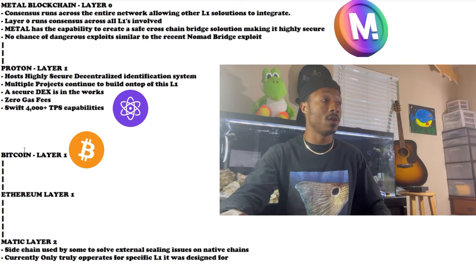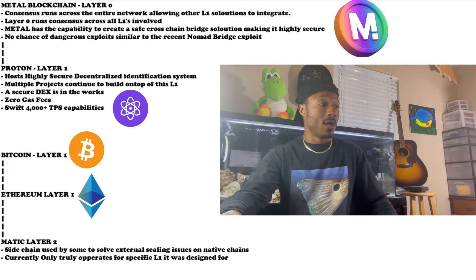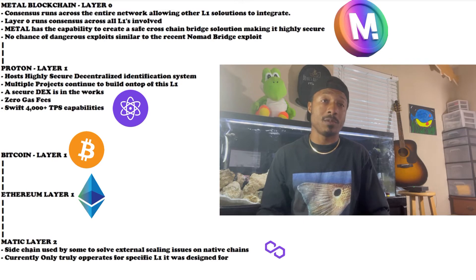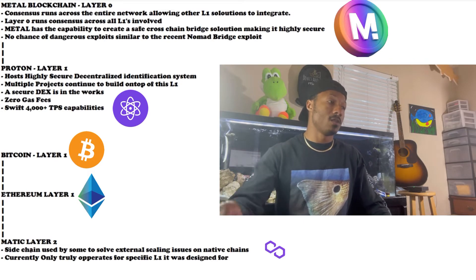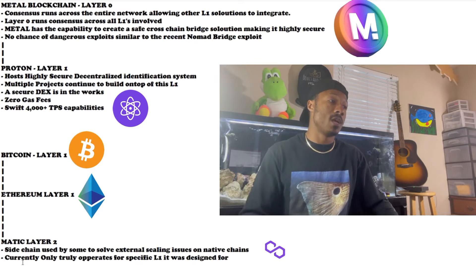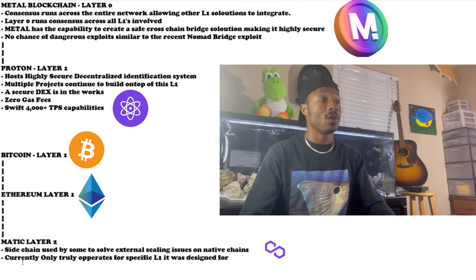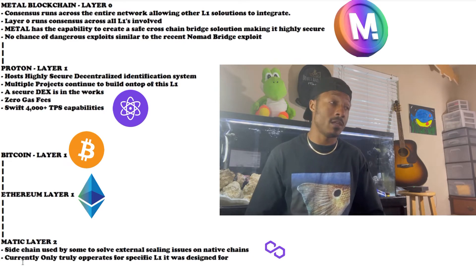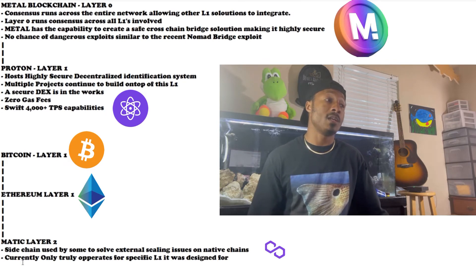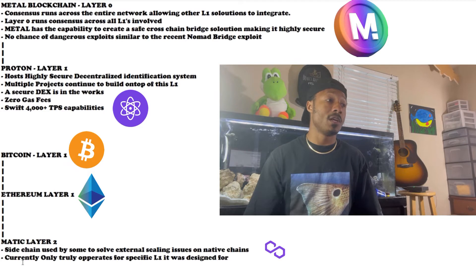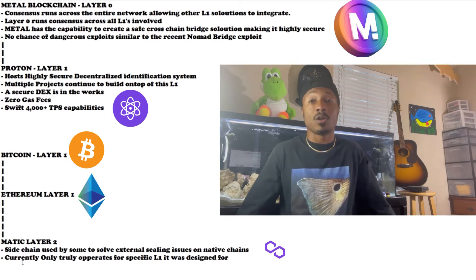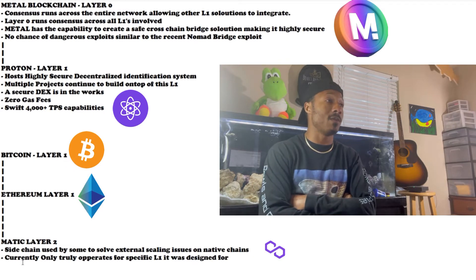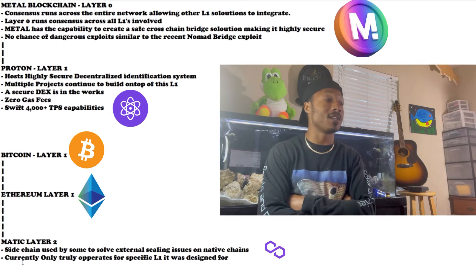Looking at the layer breakdown: we have Bitcoin as layer one, Ethereum as layer one. Then we have Matic — Matic is a side chain, which is a layer two. Side chains can be used to solve external scaling issues on native chains. The problem with layer twos is they currently only operate on the chain they were specifically designed for — Matic was designed for Ethereum to help it scale.